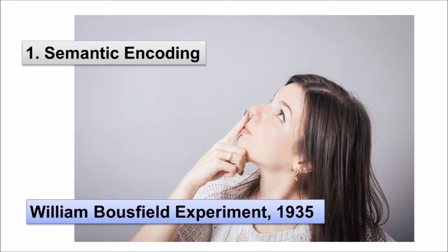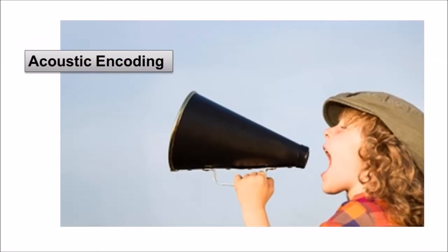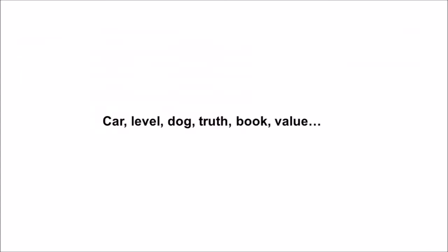When they were asked to remember the words, they tended to recall them in categories, showing that they paid attention to the meanings of the words as they learned them. Visual encoding is the encoding of images, and acoustic encoding is the encoding of sounds, words in particular.